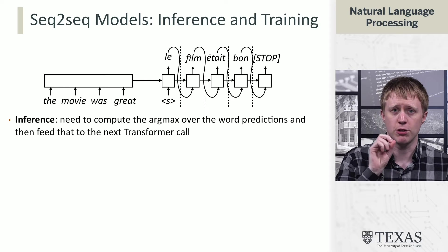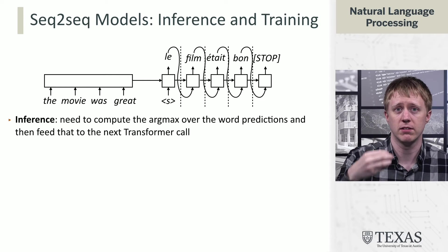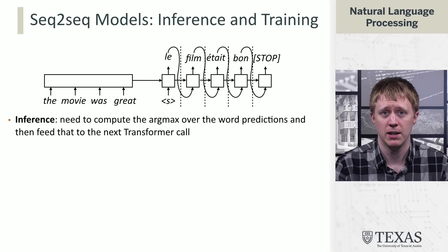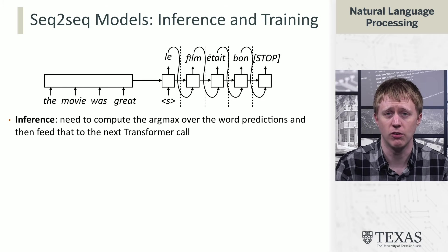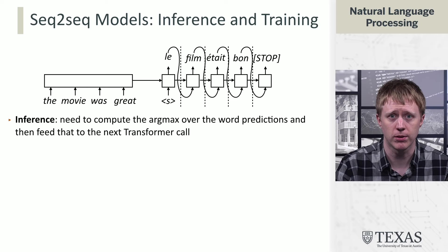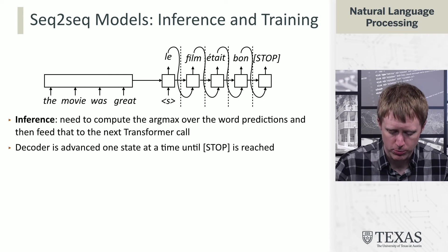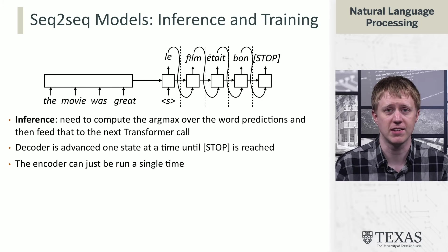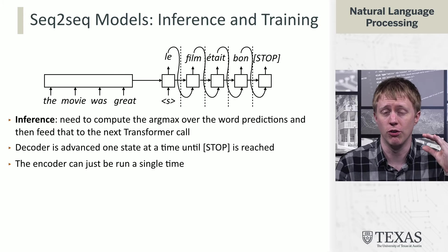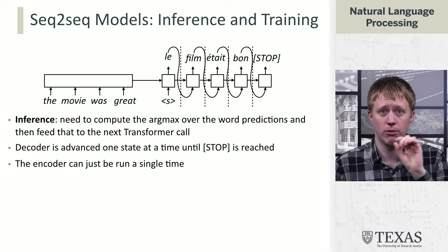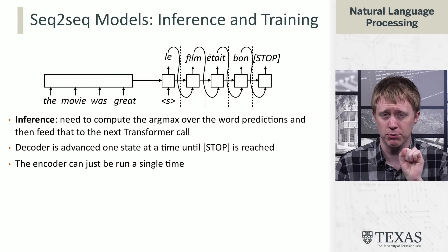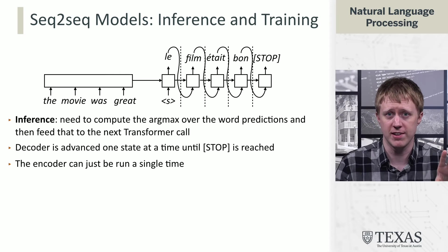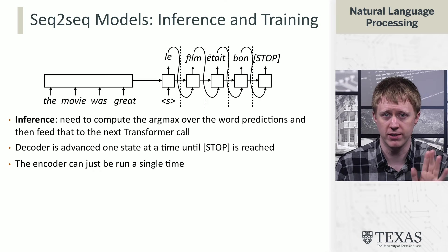Just like in language modeling, we run inference up to a particular point in the computation graph, take the argmax, get the next word, and feed that into the next step of the model to predict the next output word — moving along one at a time. The key thing that saves time is that the encoder only needs to be run once. The whole 'the movie was great' piece is just encoded separately, and we can do that once in advance.